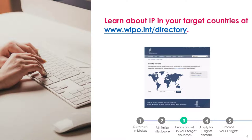From the Country Profile page, you can also find out if a country is signatory to the international filing treaties, like the Patent Cooperation Treaty, the Madrid Protocol, and the Hague Agreement, which we'll discuss later. To give you an idea of how this page works, let's look at the Country Profile for Canada.